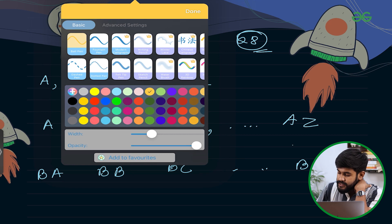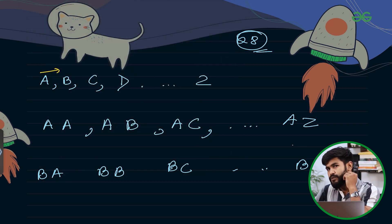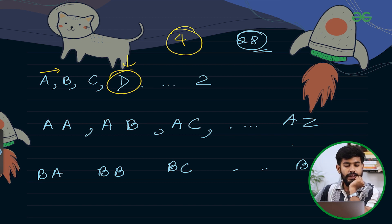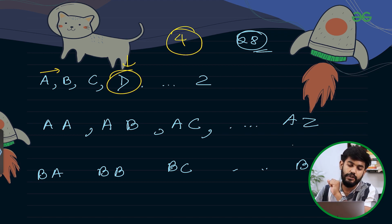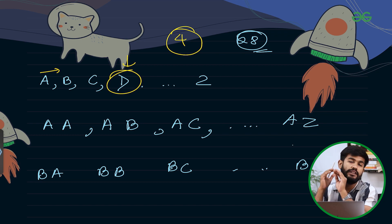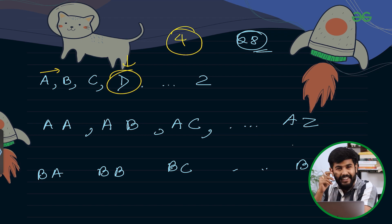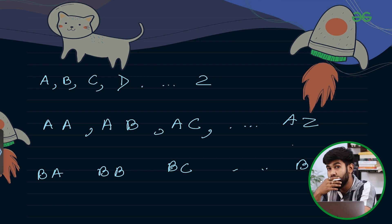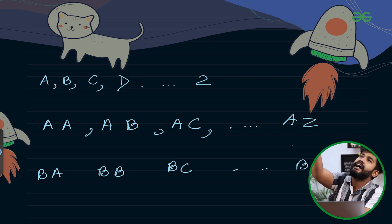What you might think is to start iterating and building the sequence until you reach that position. But when you see the constraints — the value is 10 to the power 18 — even though the expected time complexity is not given, if we start from 1 and go till 10^18, we would get a TLE, because in one second the time frame is 10^8. So 10^18 is absolutely not possible. You need to directly land at that position; you can't iterate to it.